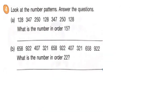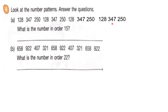Next, look at the number patterns and answer the question. The numbers are 128, 347, 250, 128, 347, 250, 128. What is the number in order 15? We know that 128, 347, and 250 are repeated. After 128 comes 347, then 250. We will group it by 3: 1, 2, 3 — repeating. This is the pattern repeated throughout the question.